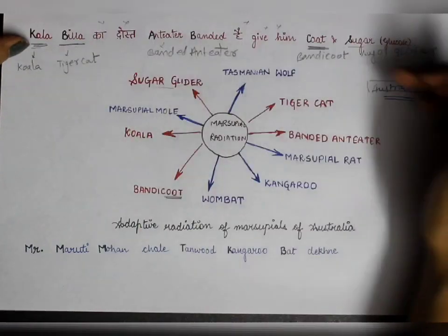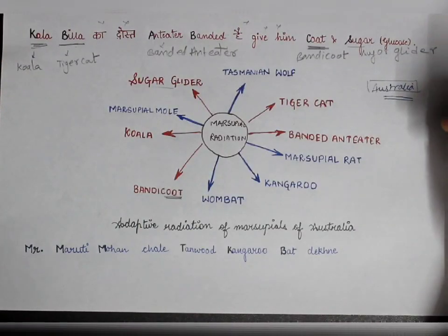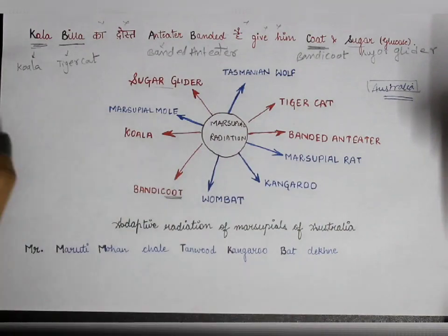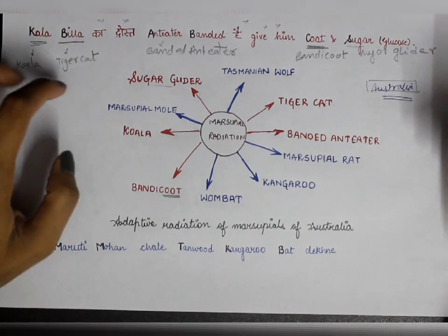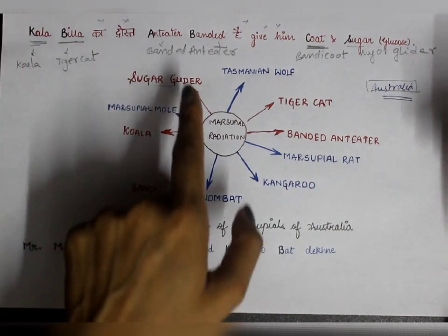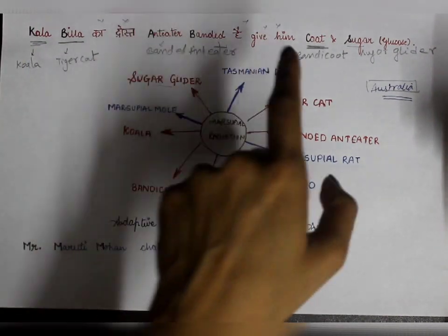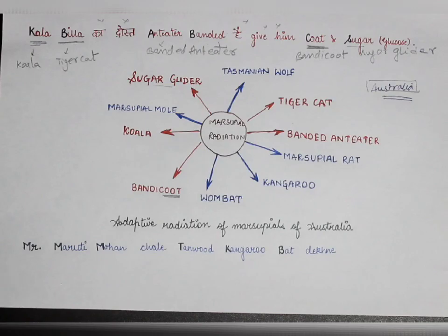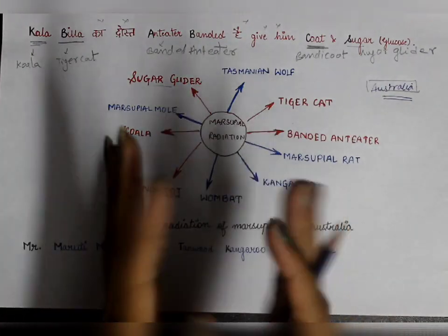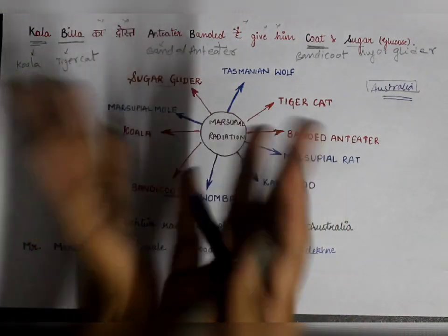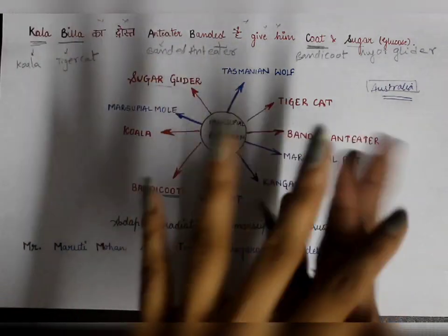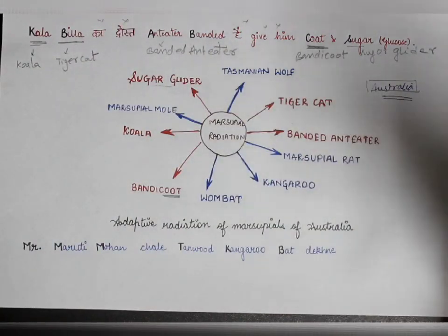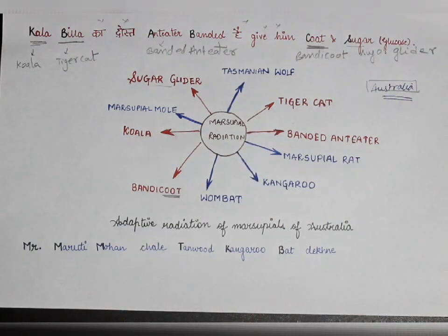So in this one mnemonic, we have talked about five animals: koala, tiger cat, banded anteater, bandicoot, and sugar glider. From the mnemonic 'Kala Billah Ka Dost Anteater Banded Hai, Give him coated sugar.'